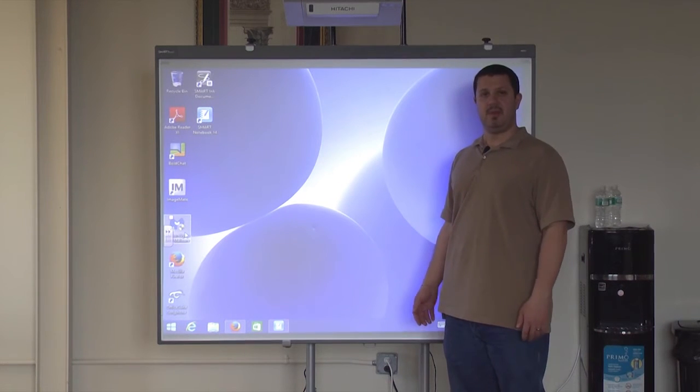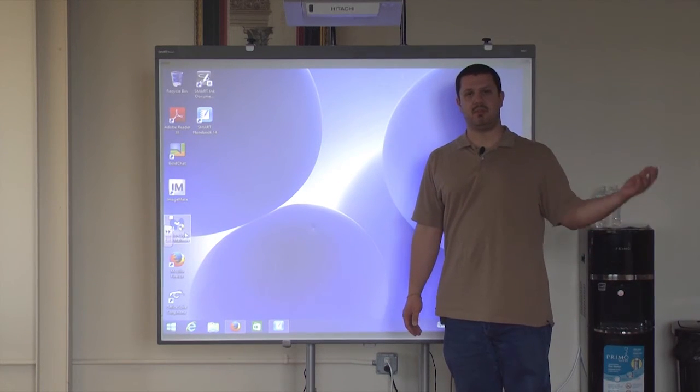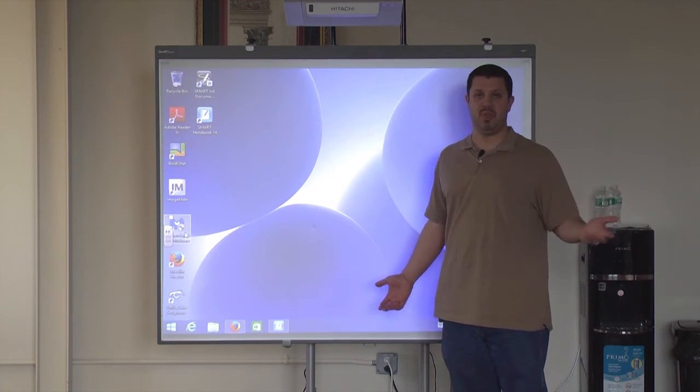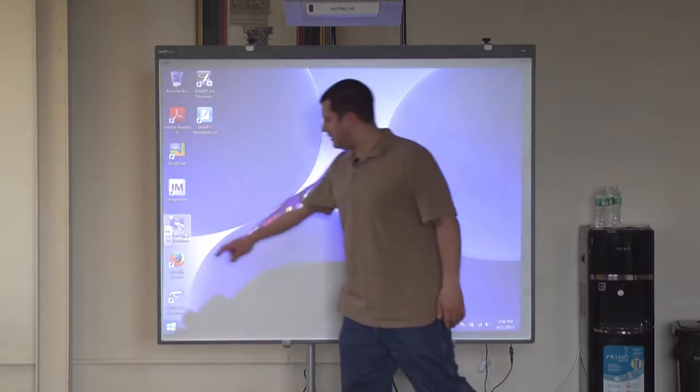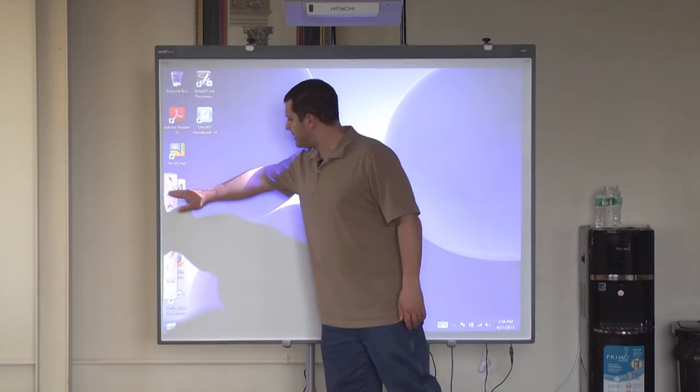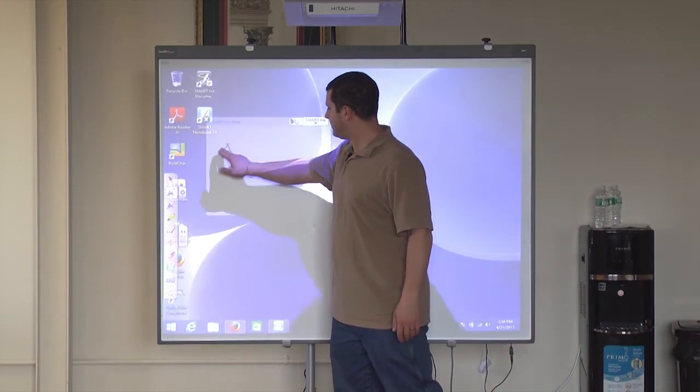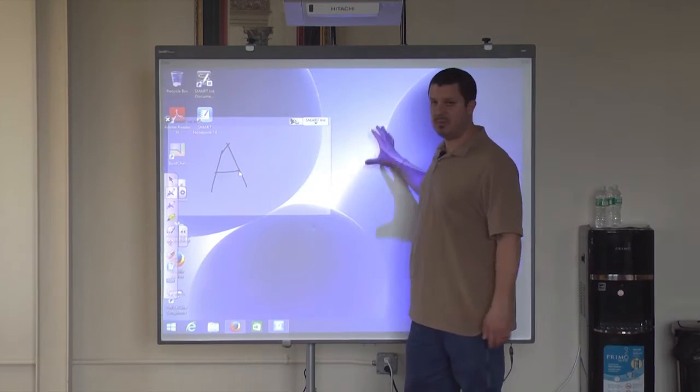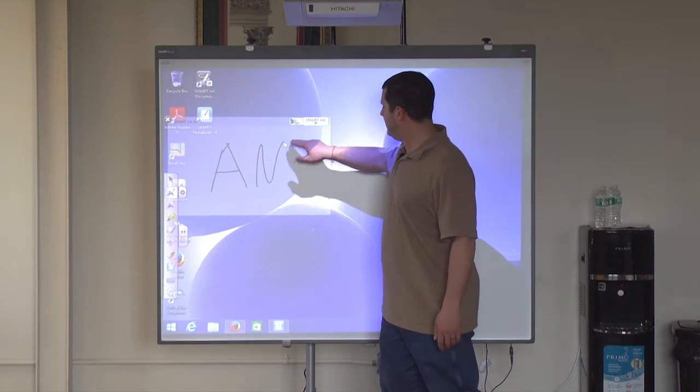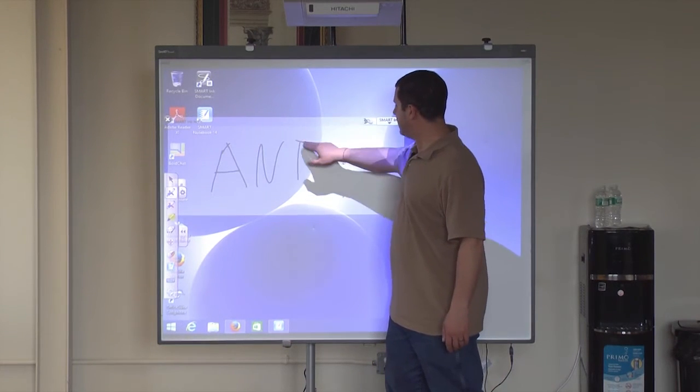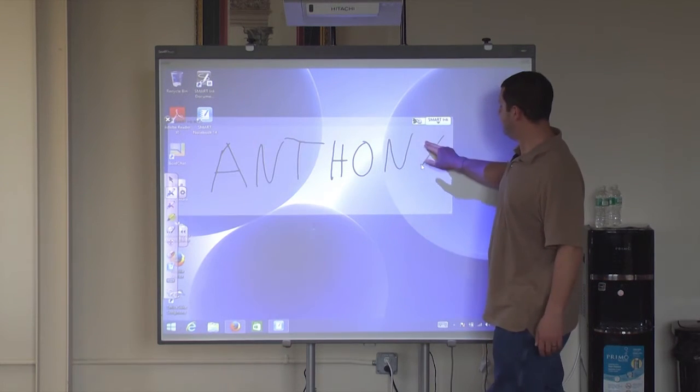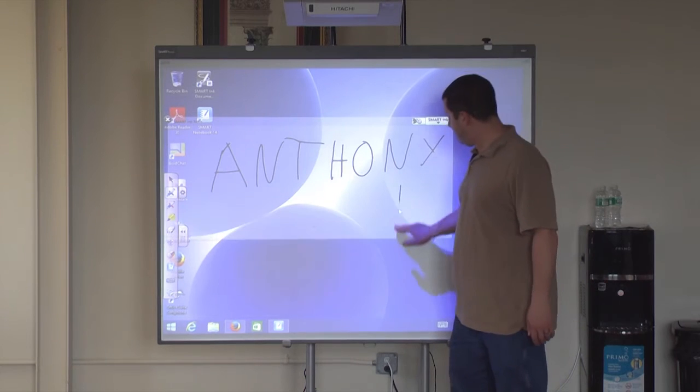So first is SmartInc. Now you might remember with the Eno board, when we wanted to write on top of anything on our screen, we just chose that icon and wrote. Pretty easy, right? But with Smart, we have a little toolbar on the side. And it can be on either side of our screen. We just select our pen. And we start to write. And when you do that, it'll automatically open up this window. And this is our SmartInc window. As you write, the window will get bigger. So it can accommodate your writing. And I apologize, I'm left-handed trying to write with my right hand. So it probably doesn't look very good.